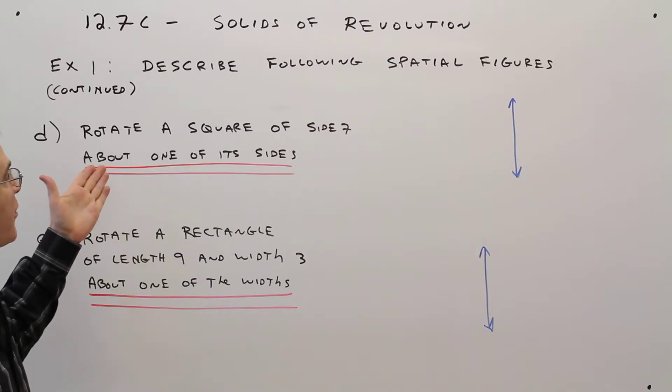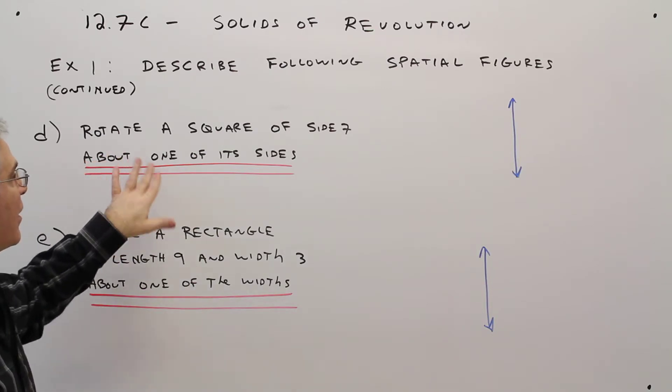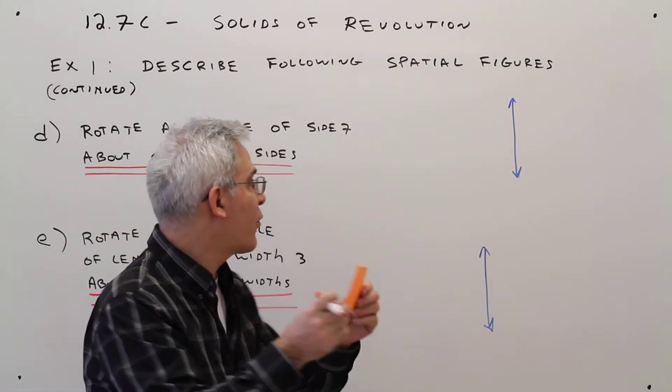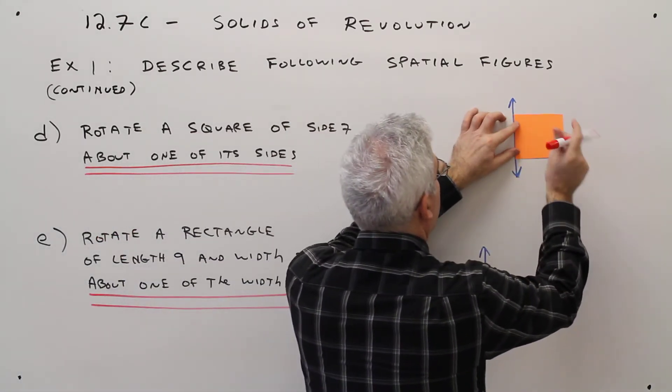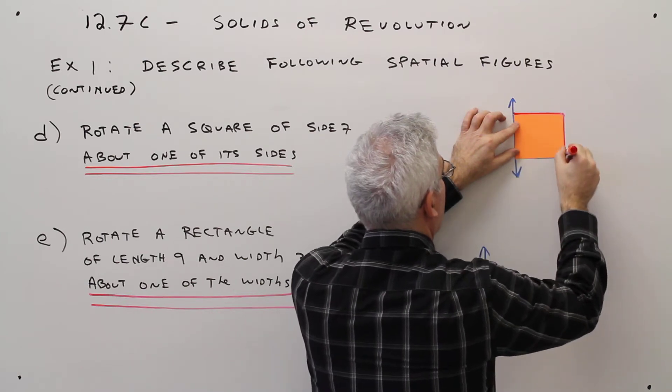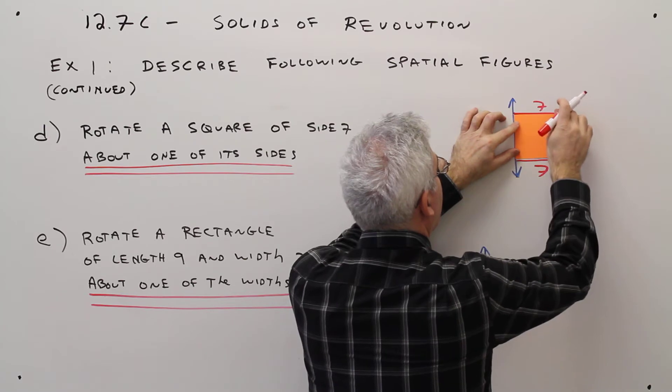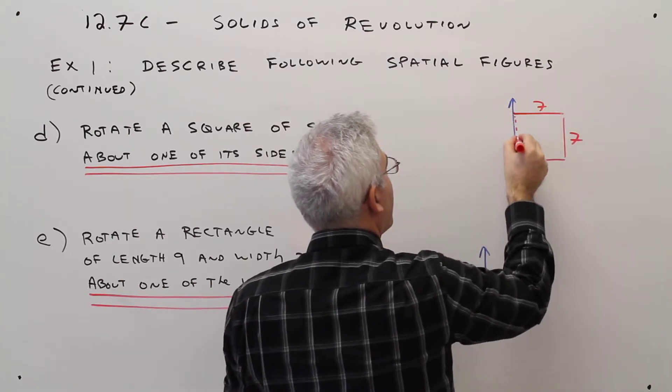Part D, rotate a square of side 7 about one of its sides. So here I've just got a cutout of a square. So we'll just say 7, 7, 7. And this is also 7.